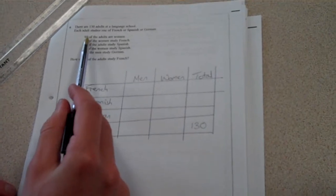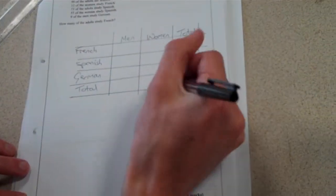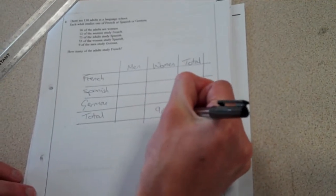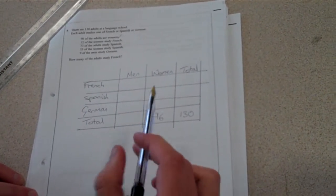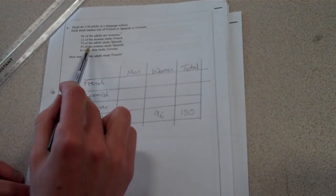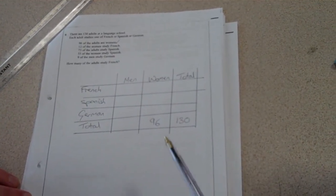So, first thing. 96 of the adults are women. The total number of women is 96. Tick. I've done that one. At this stage, I could work out the number of males. But I think it's prudent to put all of the information of the question into your two-way table, and then start to work around the other bits of information you could work out.